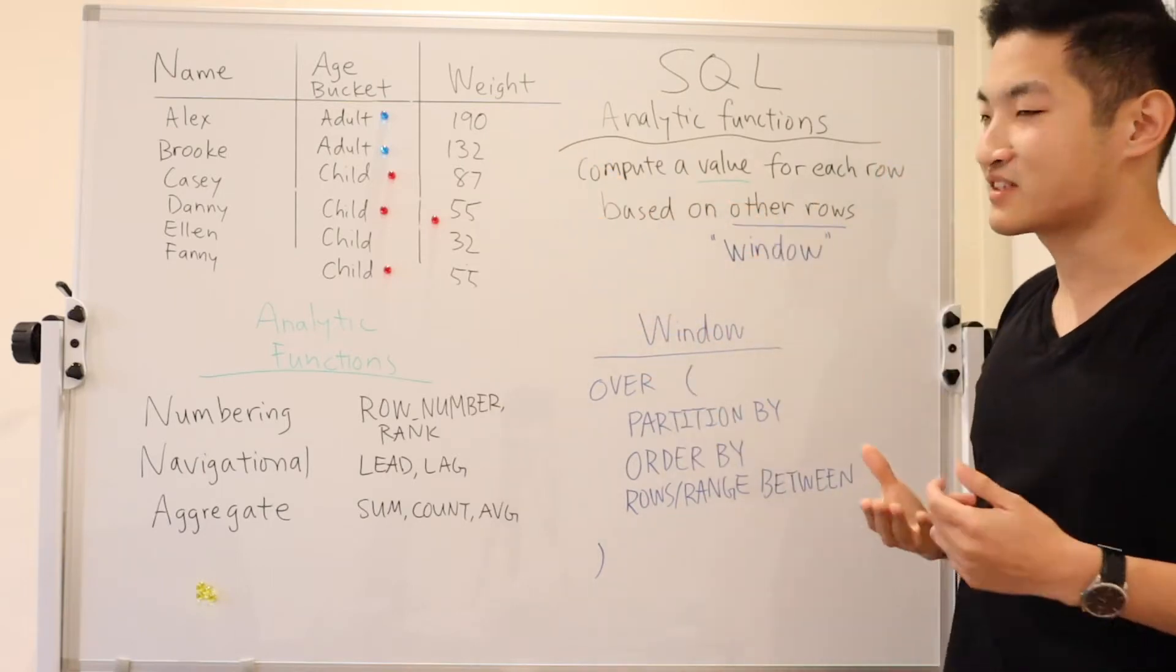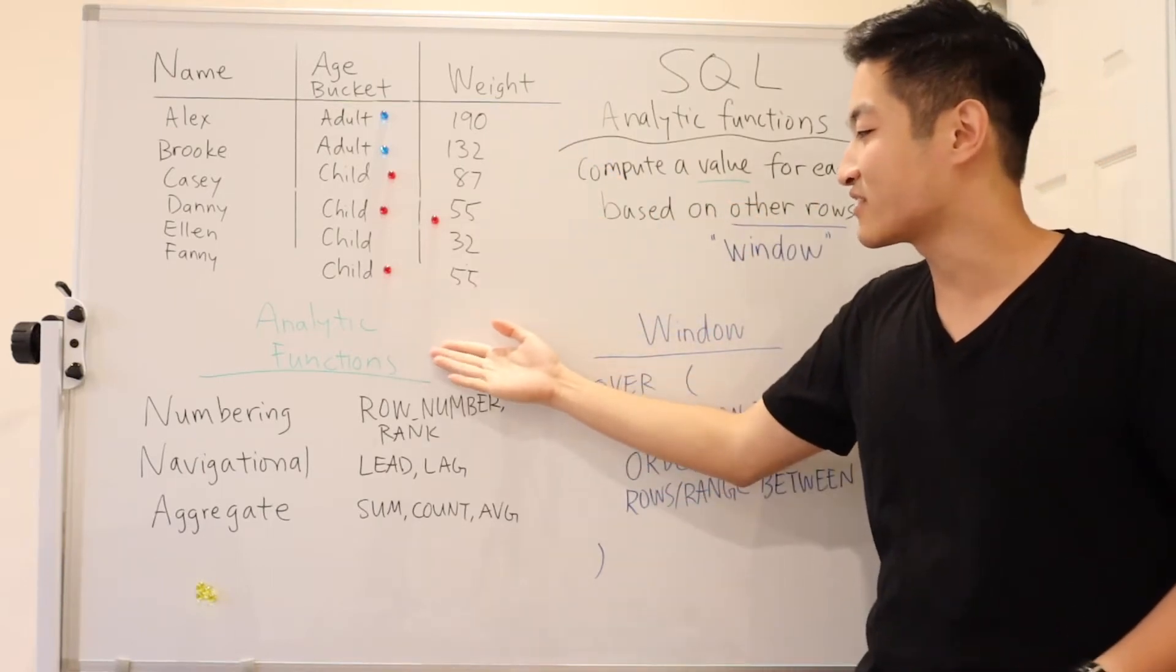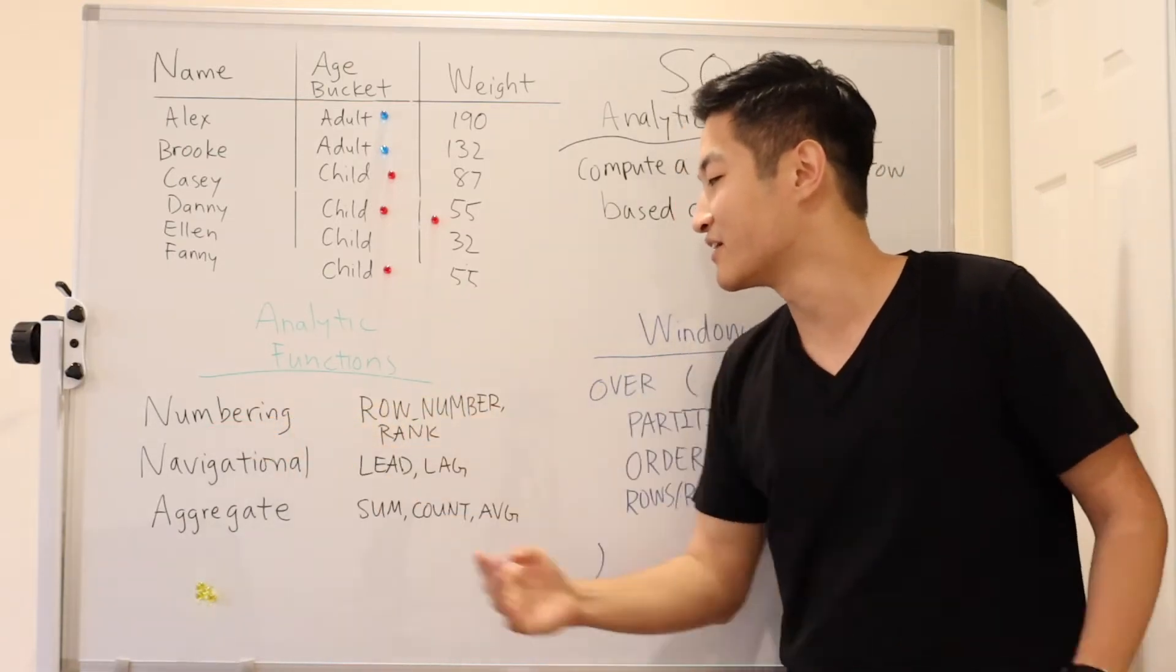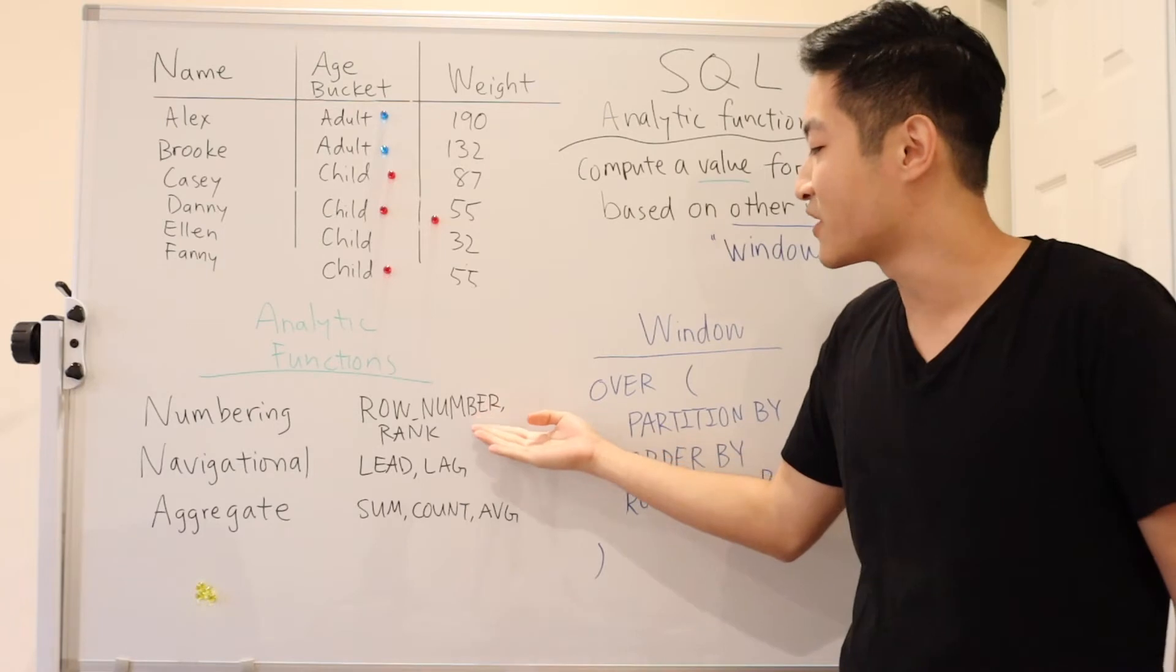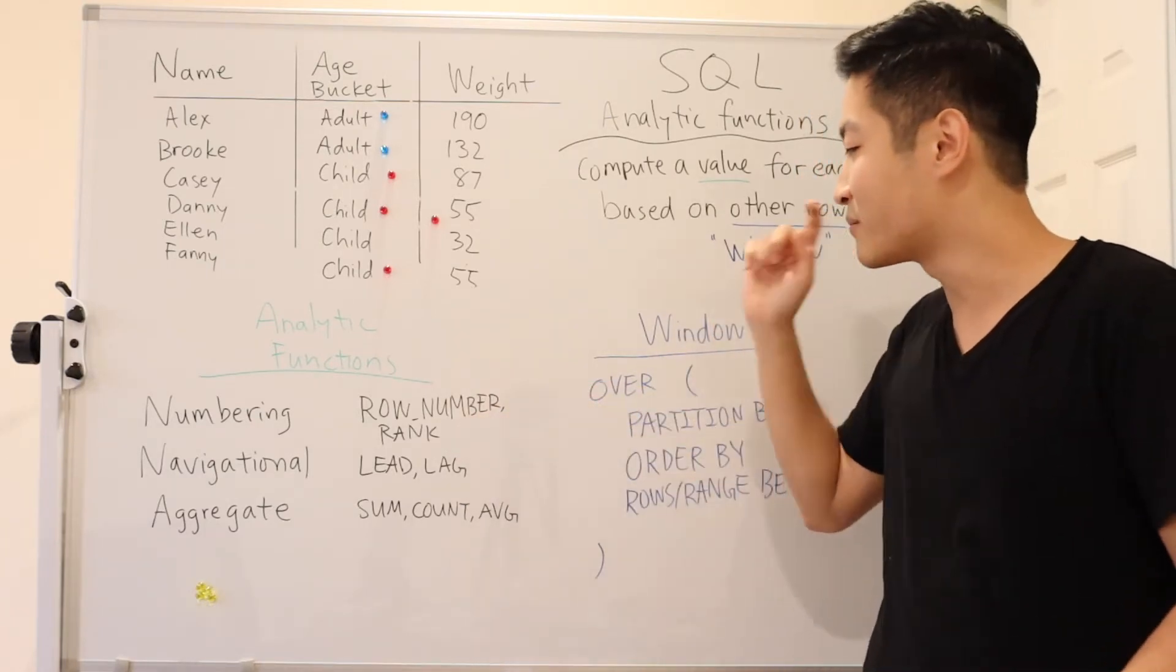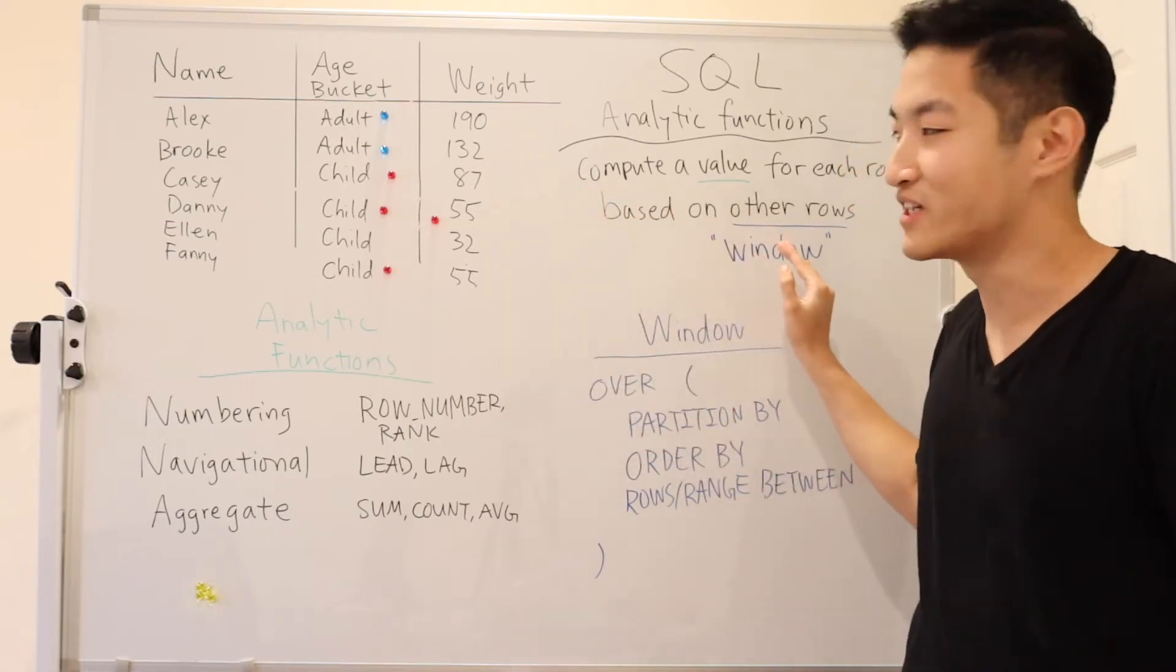So what sort of values can we compute? Well, these are the three types of analytic functions. The first type is a numbering function, such as row number and rank. So row number, I can say what the number of a row is in its window.